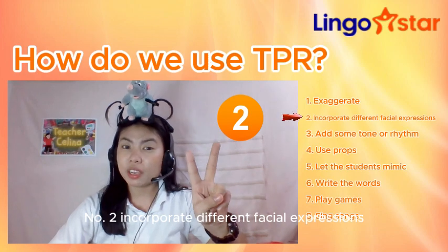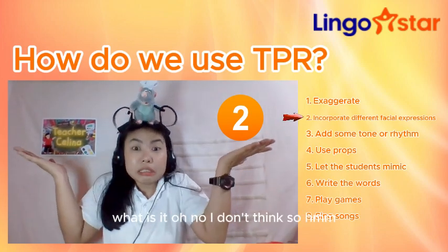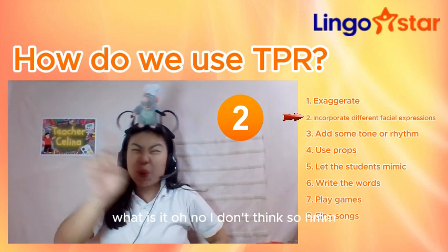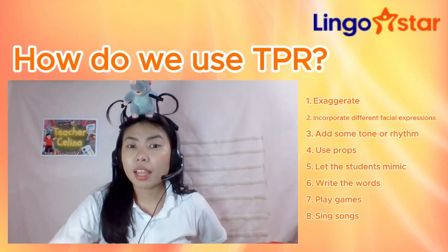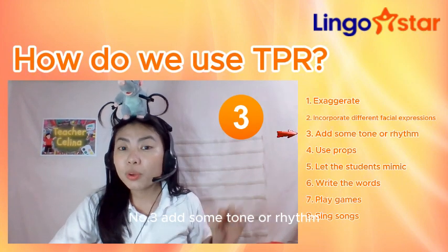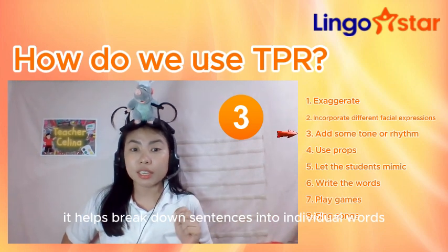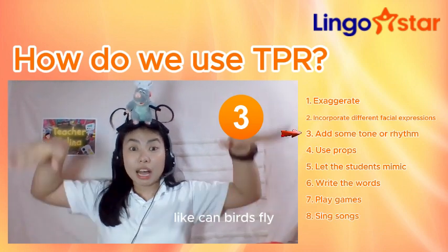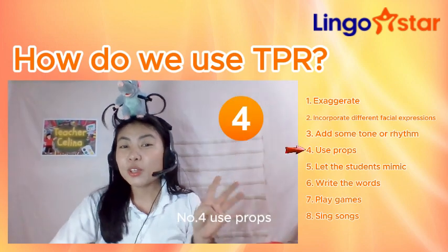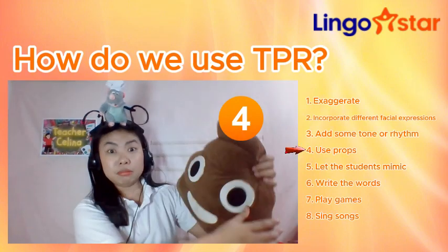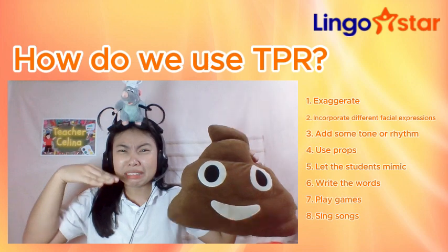Number three, add some tone or rhythm. It helps break down sentences into individual words — like, "Can birds fly?" Number four, use props. Smelly, smelly, smelly!